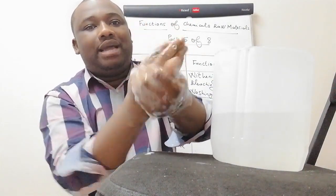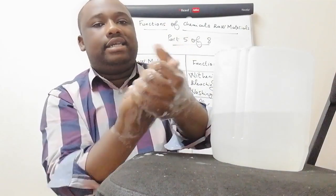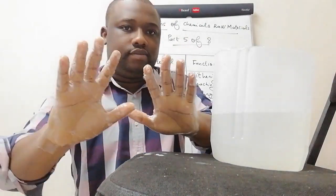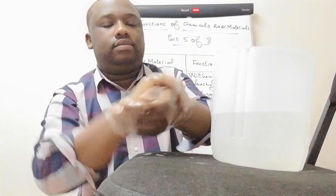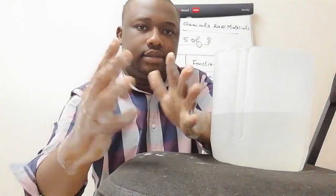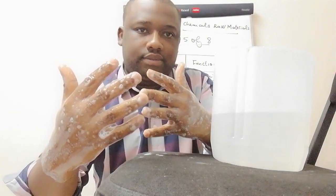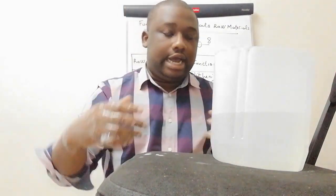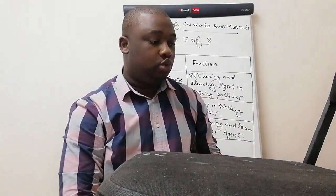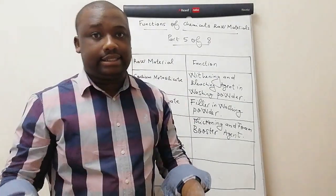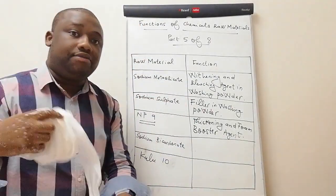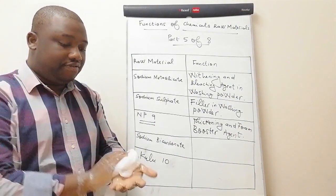You see the foam all over my hands. Just bring it close to the camera for you to see. I'll just wipe my hand and carry on with functions of our ingredient. I was actually doing this to show you how it is. You see what N-Penine alone is capable of doing. So it's an ingredient that does a lot. Reason why some people even go to the extent of calling it a universal cleaner. Because it does a lot.